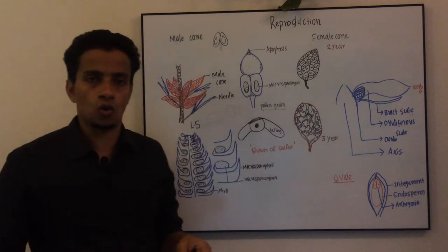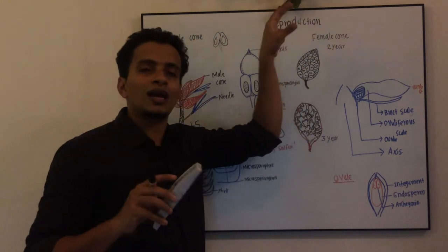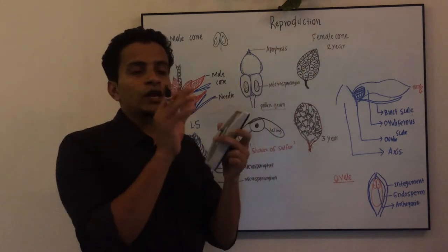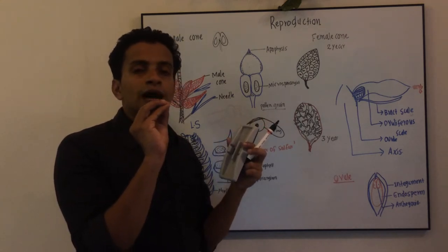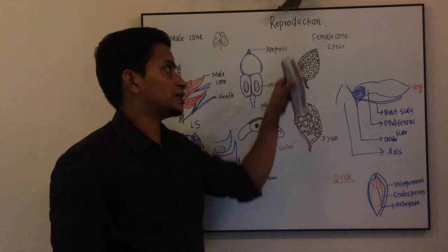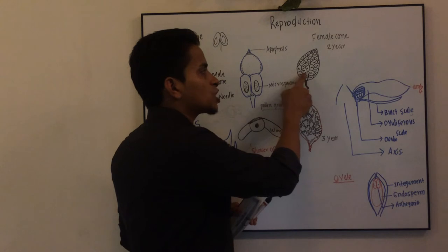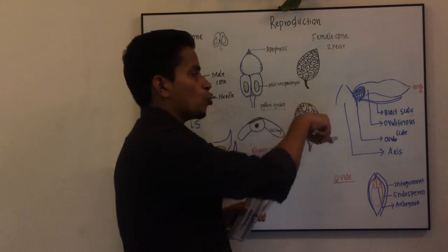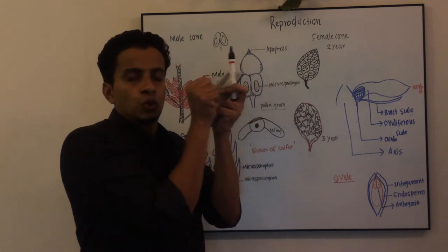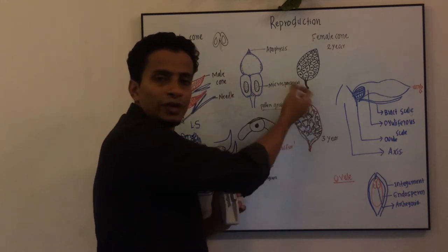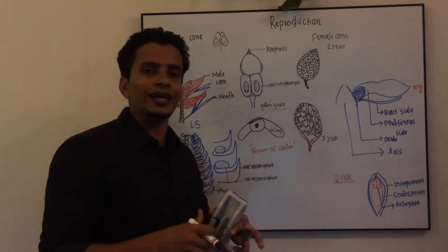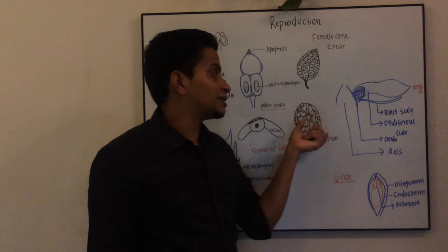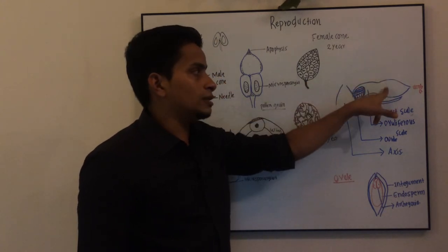Coming to the second portion — the female cone. The female cone is the aggregated version of megasporophylls. The megasporophylls are compactly arranged to form the female cone, but if you look at them closely, the megasporophylls are loosely arranged on the axis.